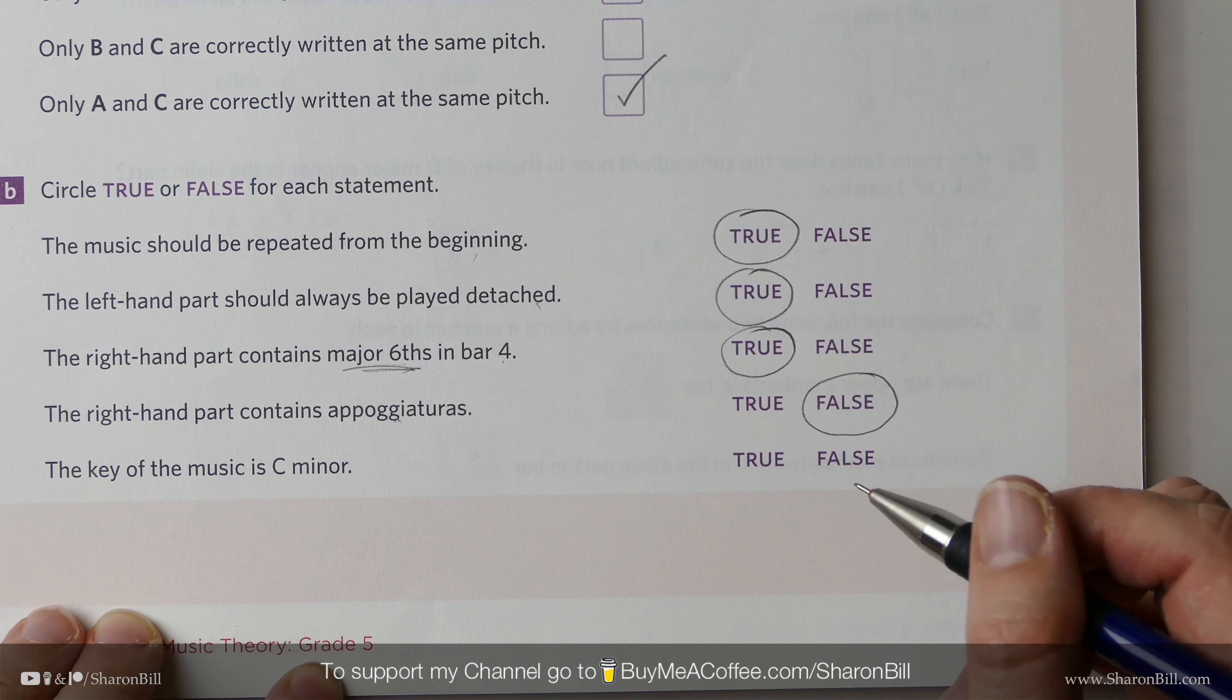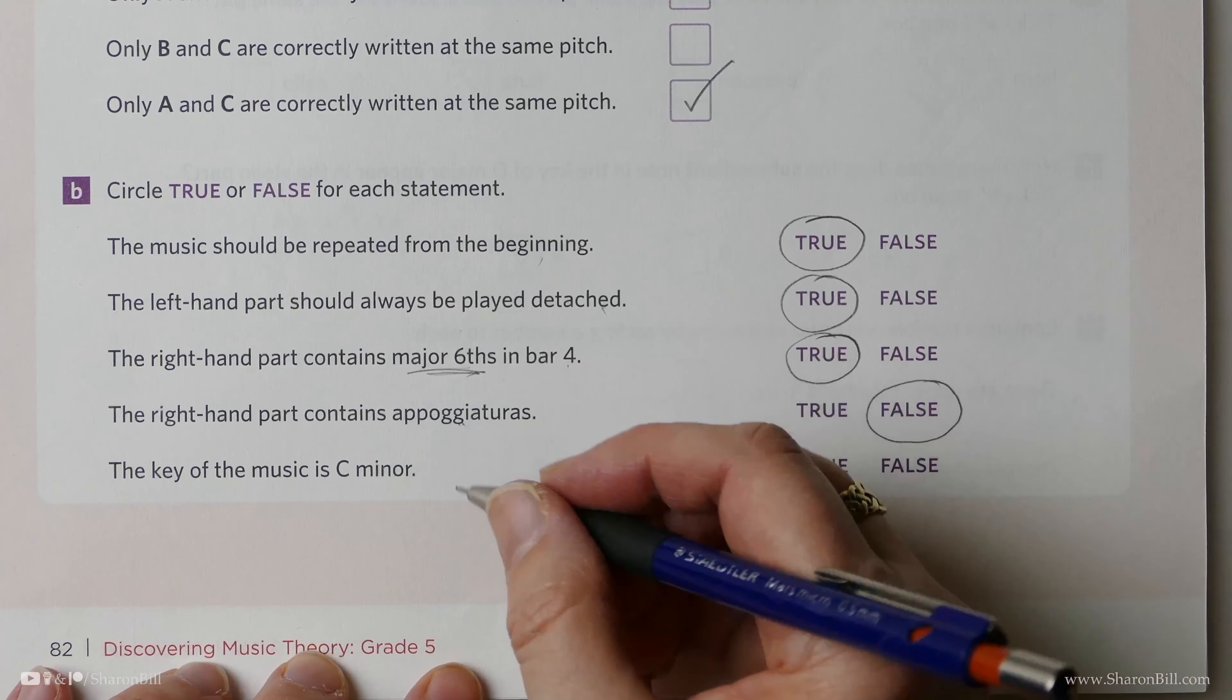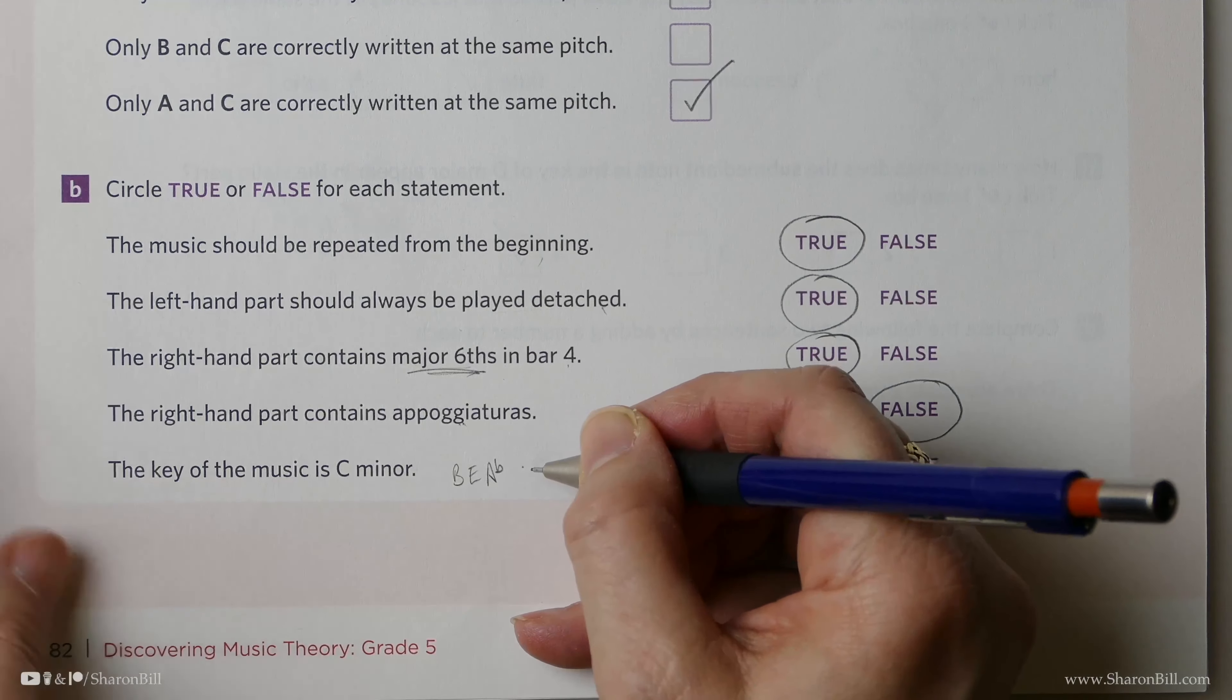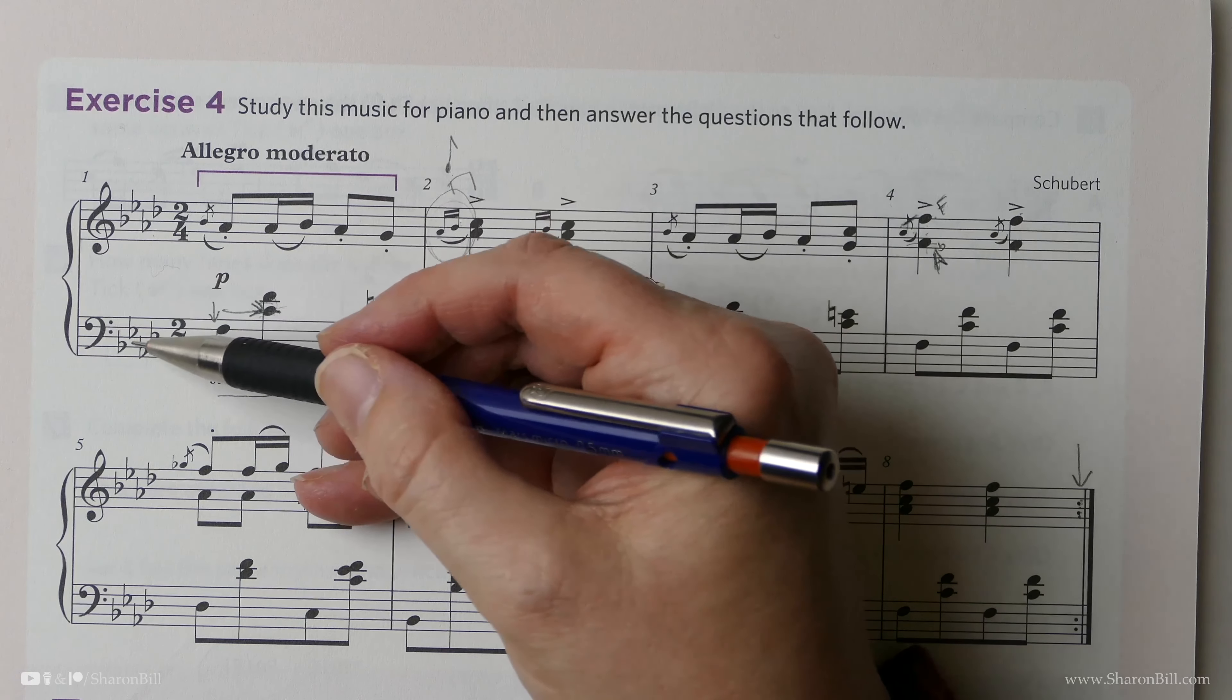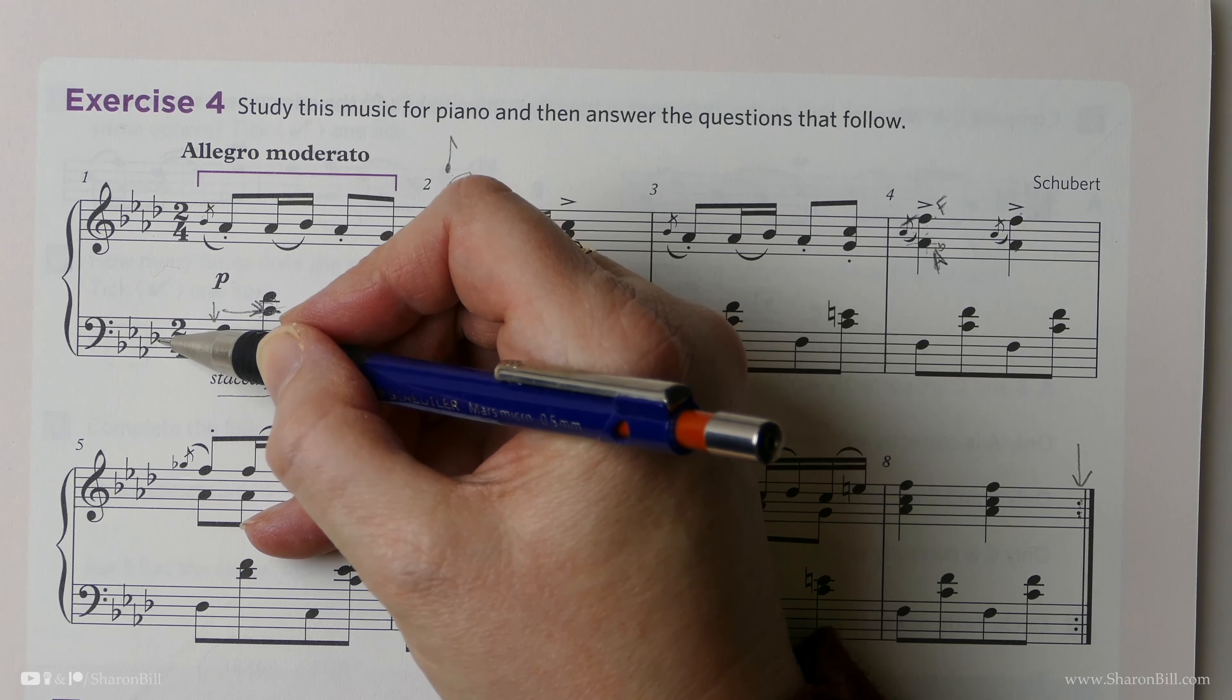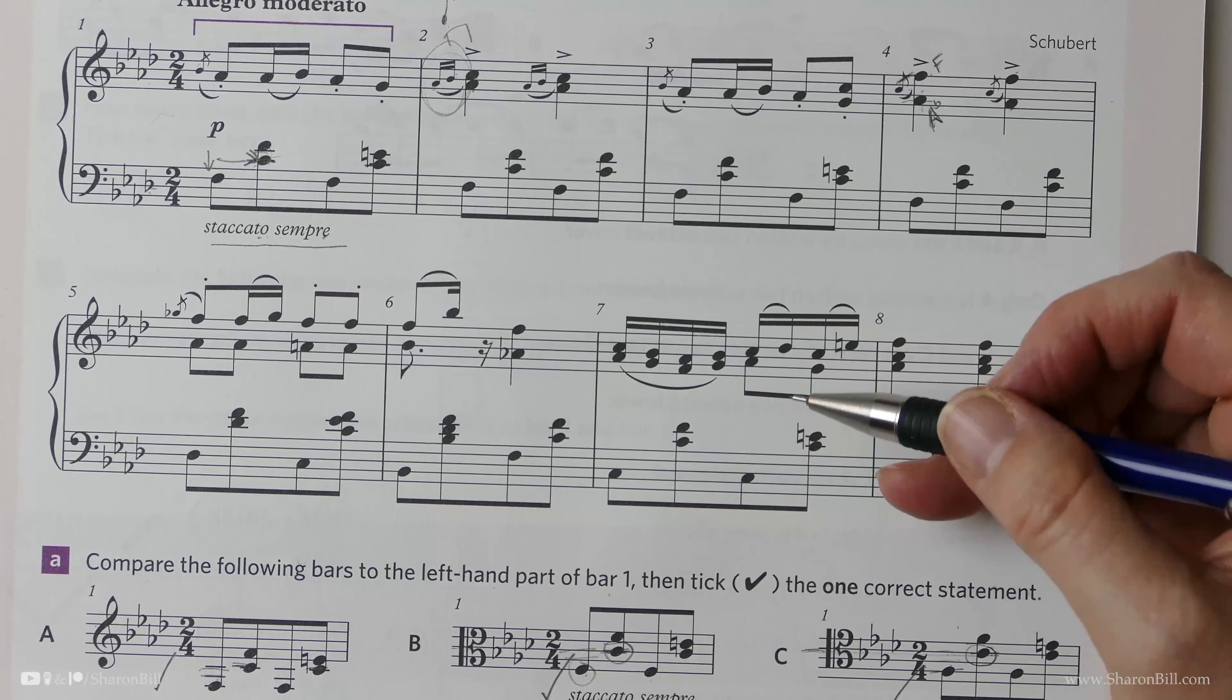Is it true that the music is in the key of C minor? C minor is related to E-flat major, which has B-flats, E-flats, and A-flats. Here we have a key signature of four flats. We've got one flat too many in the key signature, so that's incorrect. It's actually A-flat major, which is related to F minor. That's false.